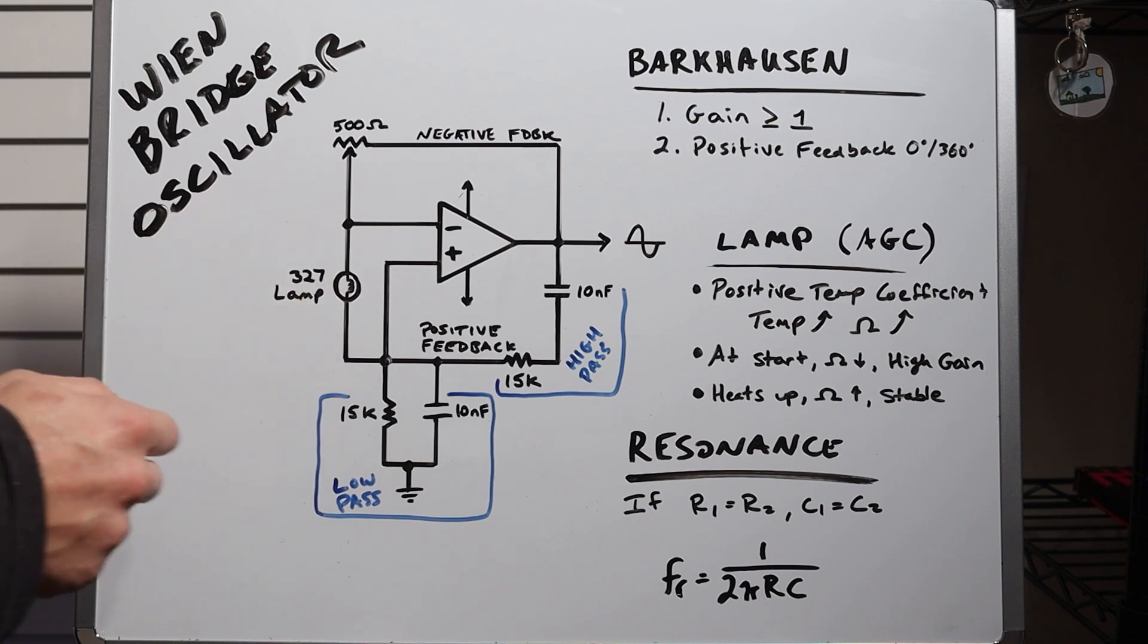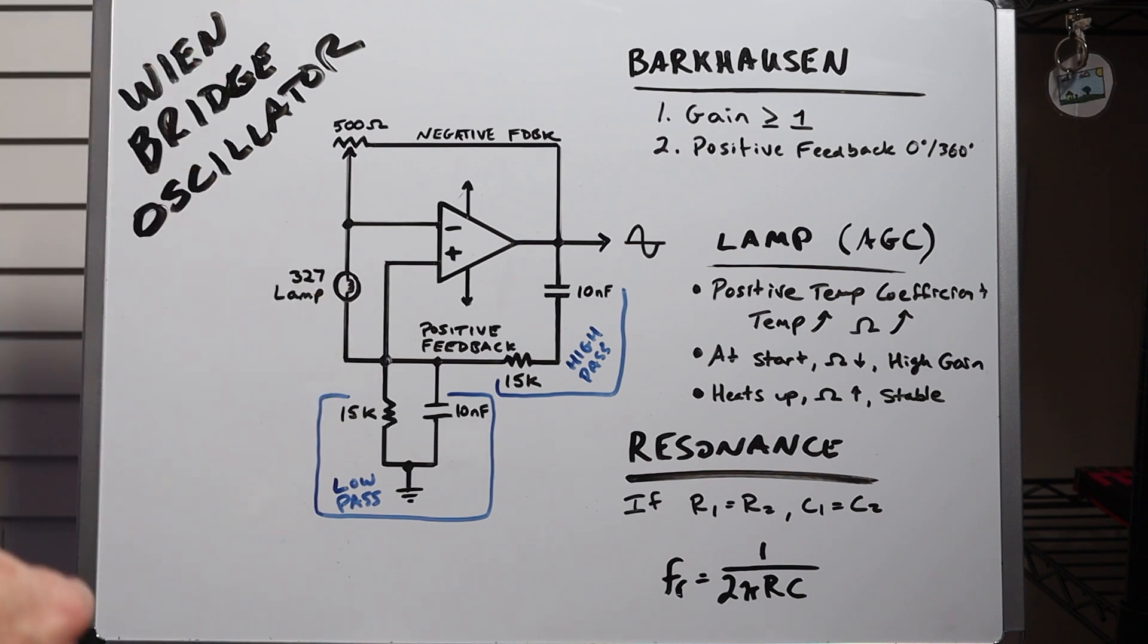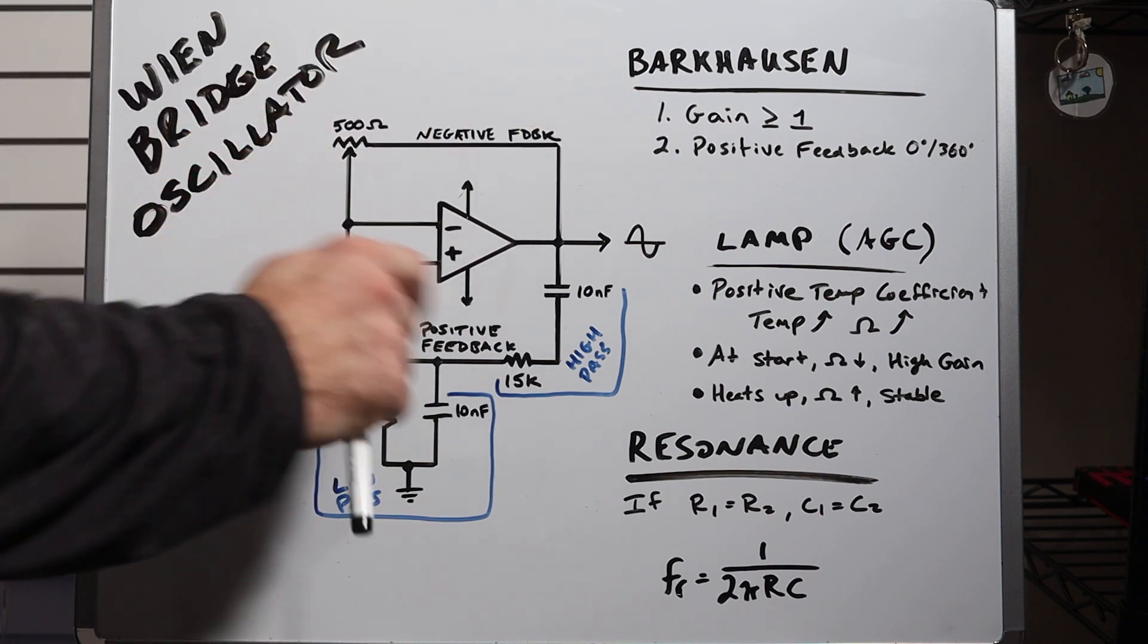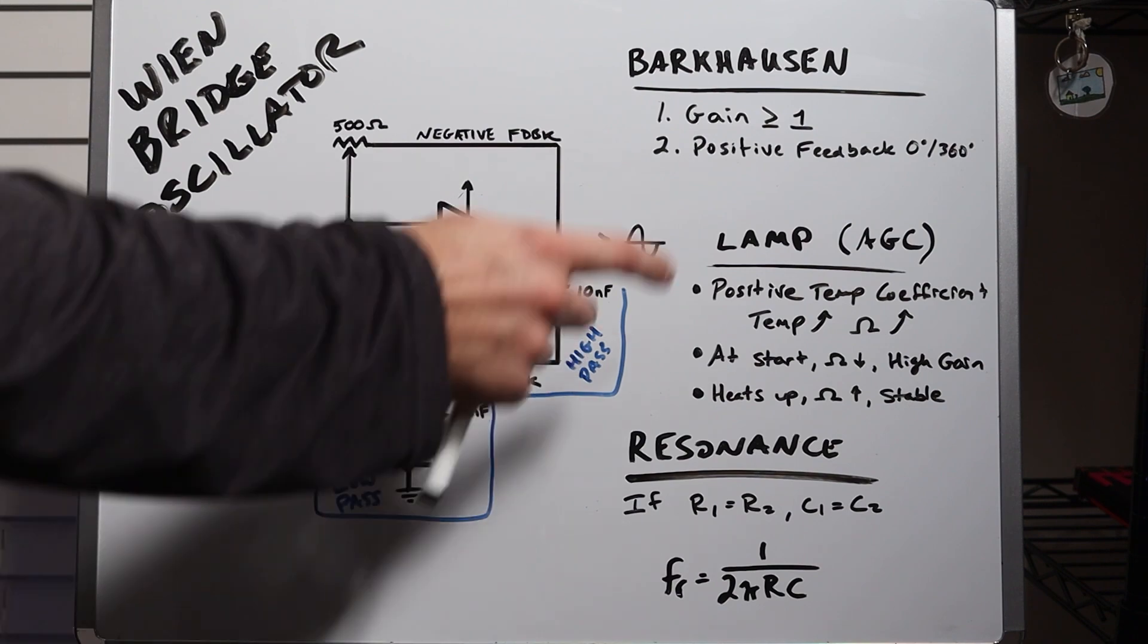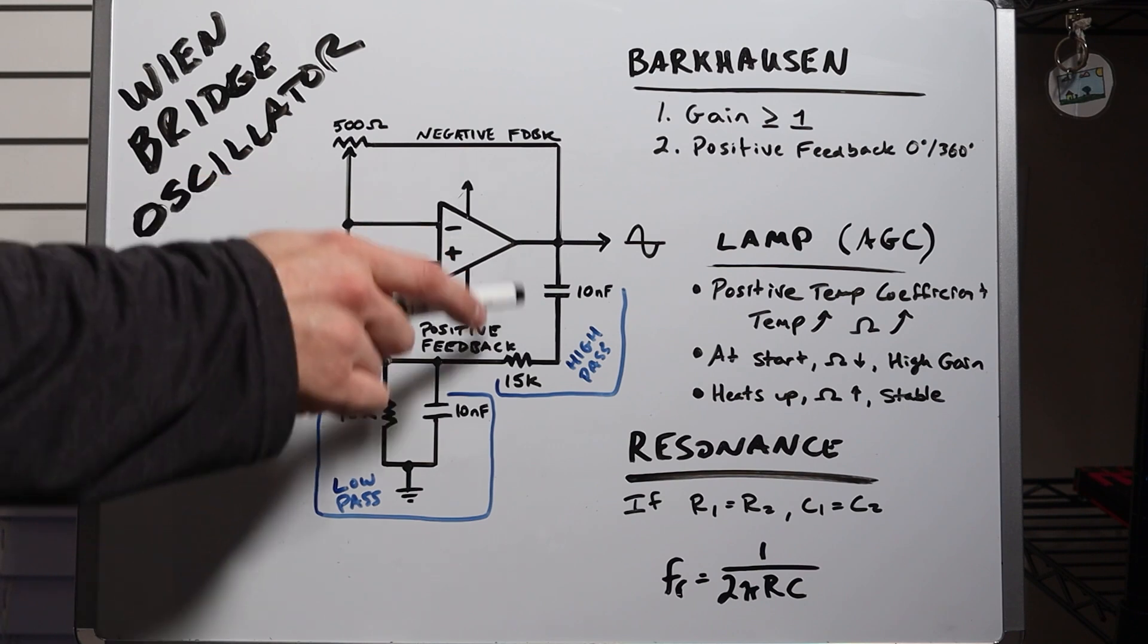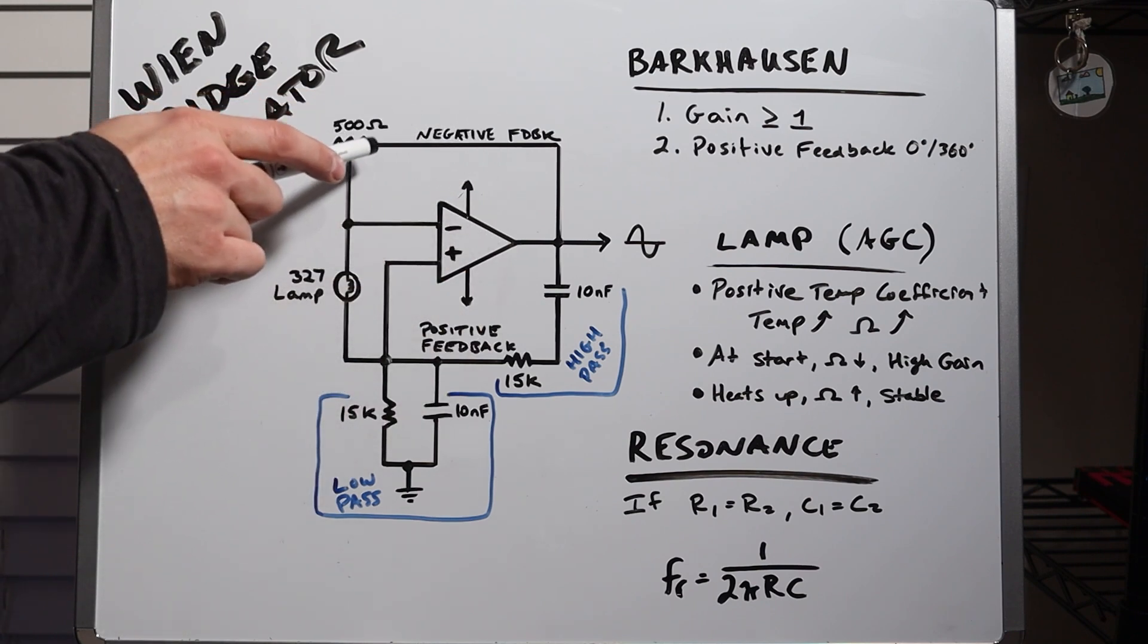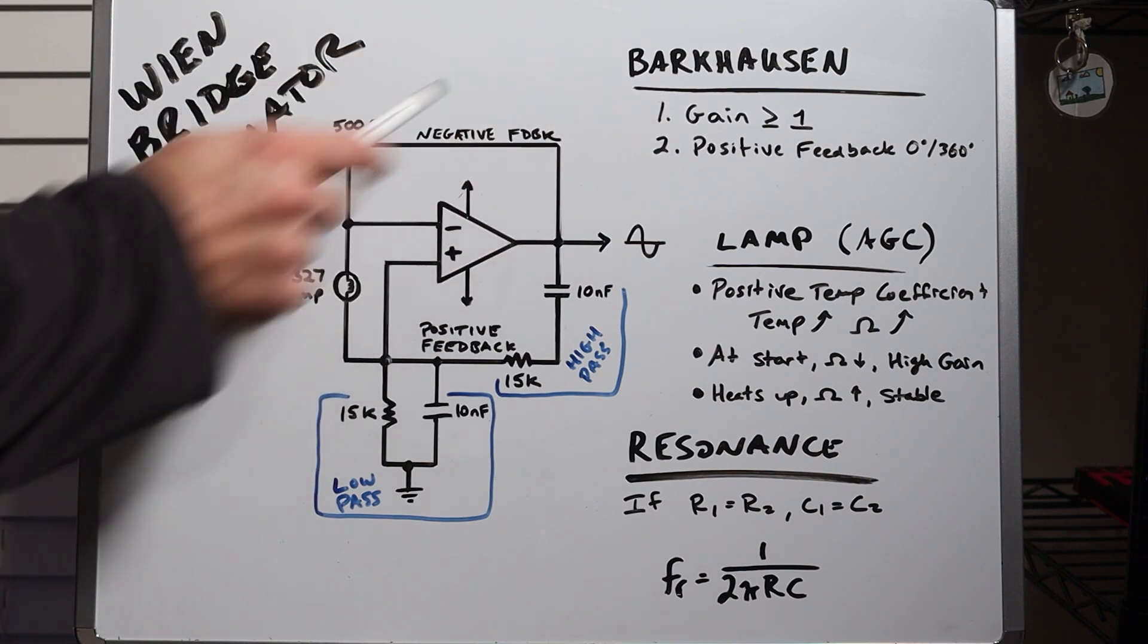So like any oscillator, we have to have a couple of things going on in order for it to start oscillating and continue to oscillate in a stable manner. And that is the Barkhausen criteria. We have to have a gain greater than or equal to one. And we have to have positive feedback from the output to the input with an integer multiple of 360 degrees, meaning it's in phase. Now our op amp is acting as a differential amplifier. So we have two feedback loops. We have a negative feedback loop that goes through this variable resistor that we need to tweak once it stabilizes to get the gain equal to one.